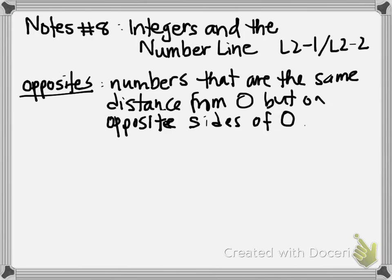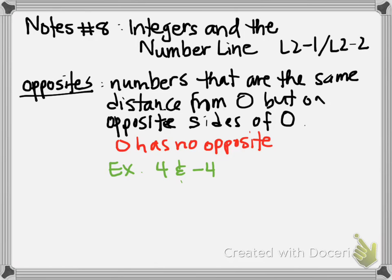So obviously, 4 to the right and 4 to the left of zero. In order to indicate what direction 4 is going, we put a sign attached to it. If we're going to the right on a number line, we're going in a positive direction. If we're going to the left of zero, we're going in a negative direction. There's one number and one number only that does not have an opposite — zero. Zero has no opposite. I have seen kids write negative zero before on a test, and that actually doesn't exist. So an example of opposites would be 4 and negative 4 — same number, but opposite signs.